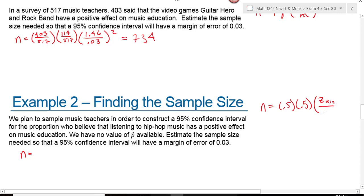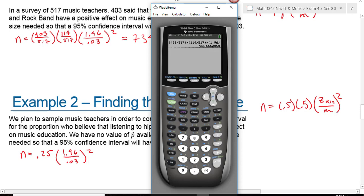Z sub alpha over 2 divided by your margin of error squared. So that's 0.25 times 1.96 divided by 0.03 squared.